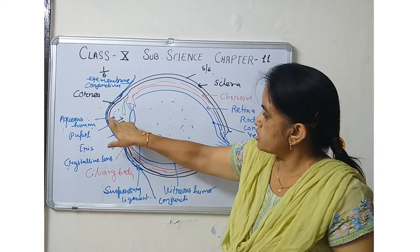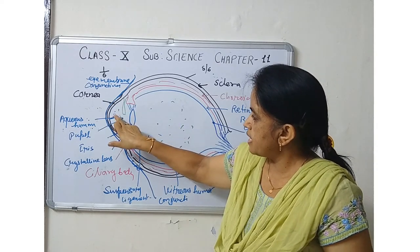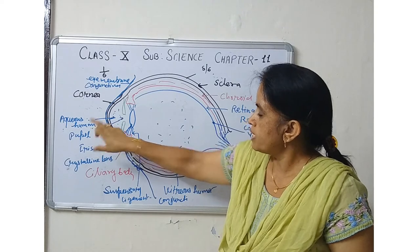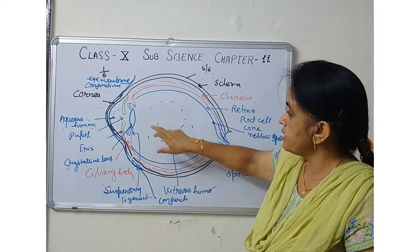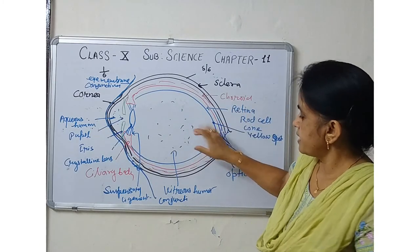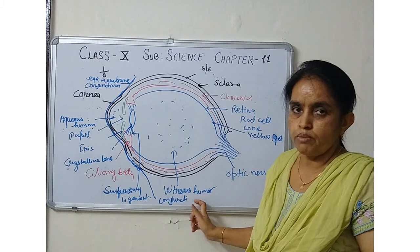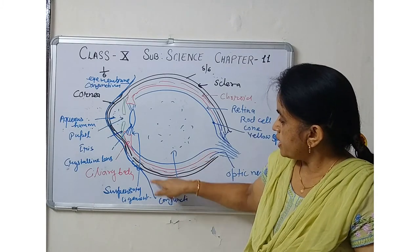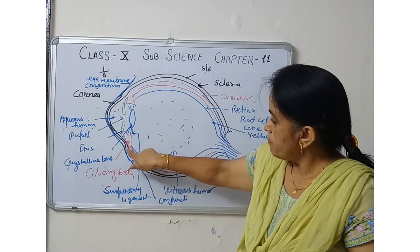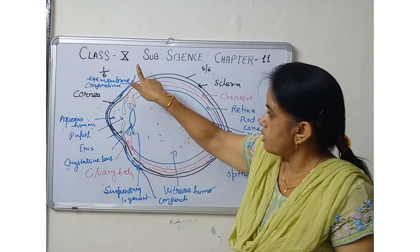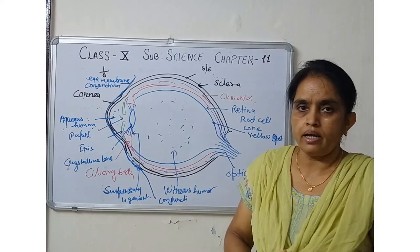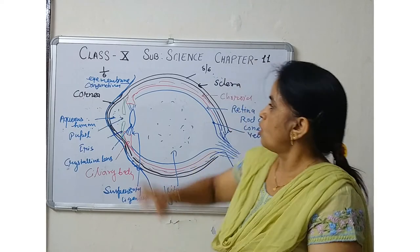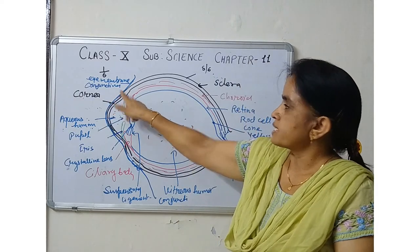A fluid is present between the eye lens and the cornea — that is called aqueous humor. A similar fluid is present between the eye lens and the retina — that is called vitreous humor. A very thin membrane present around the cornea keeps our eyes moist — that is called the conjunctiva.